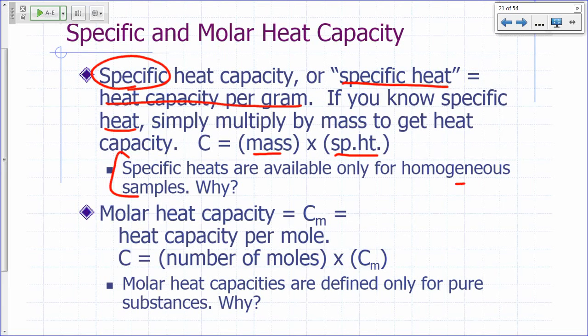Specific heats are available only for homogeneous samples. Why is that? What do we mean by homogeneous? It's uniform throughout. If you have a sample that's not uniform throughout, then different parts of your system might have different heat capacities. So they're going to have different specific heats. Specific heats you can look up for pure substances.